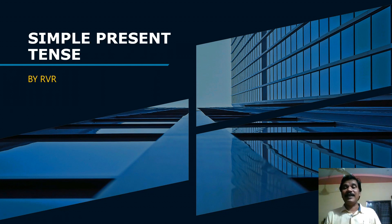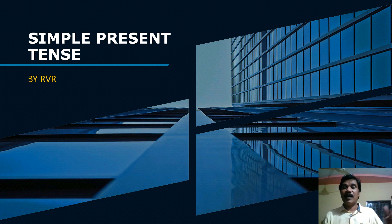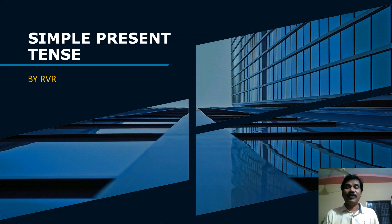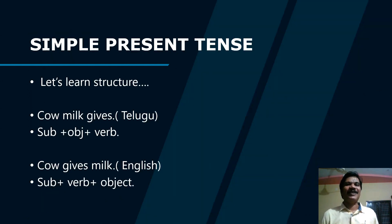Simple present tense is the most important tense because in our language we use nearly 60 to 70 percent of simple present tense in day-to-day life activities — 'go there,' 'sit here,' 'I want to go,' 'I go to school.' We use very simple English. So today we are going to learn simple present tense. Let's learn its structure.